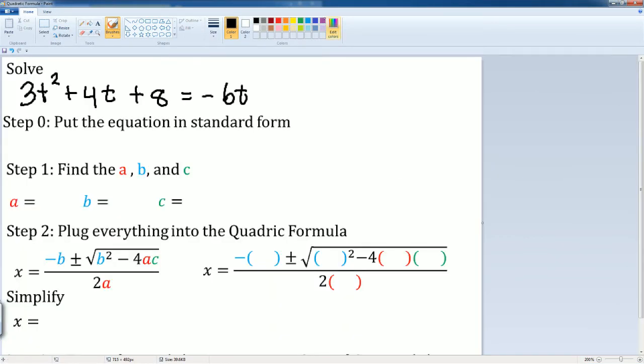So to put this in standard form, I'm going to first now add 6t to both sides giving me 3t squared plus the 4t plus 6t here becomes 10t plus 8.